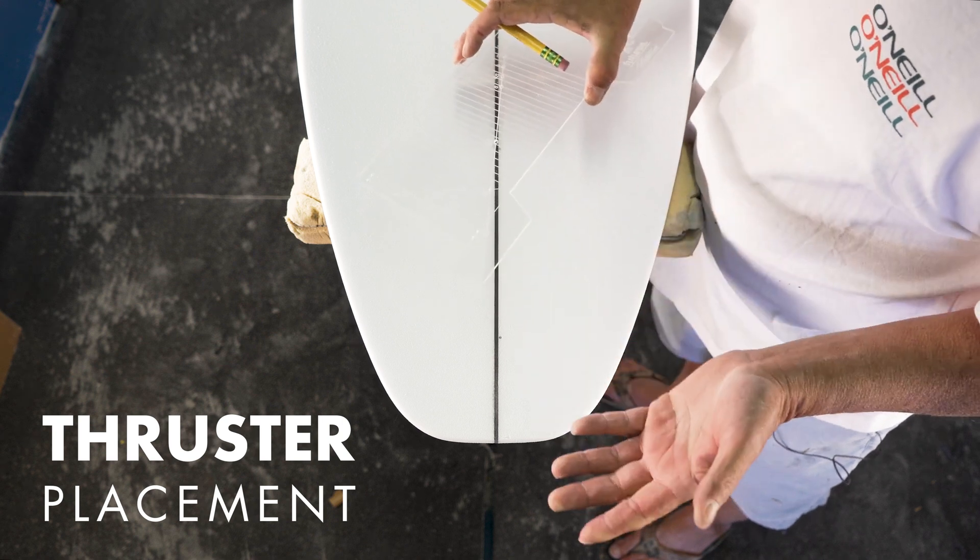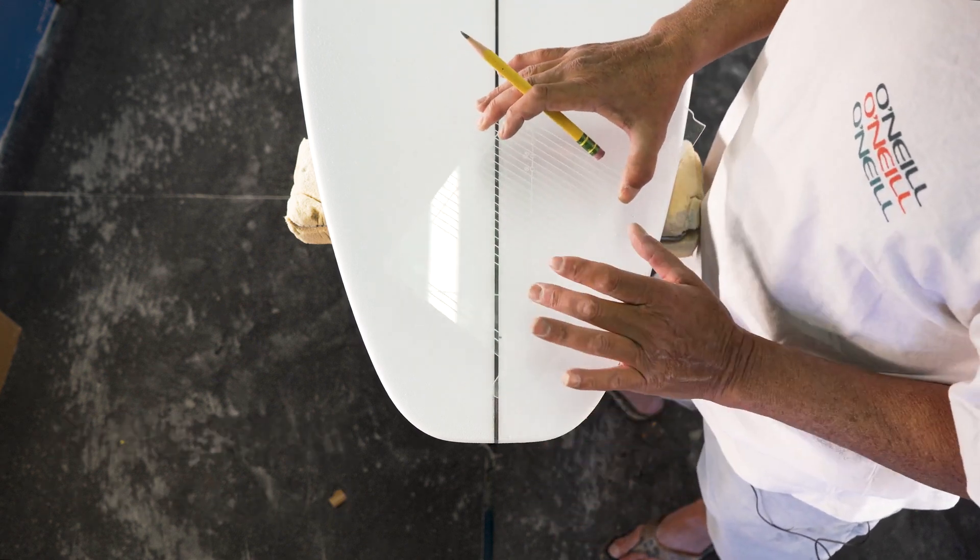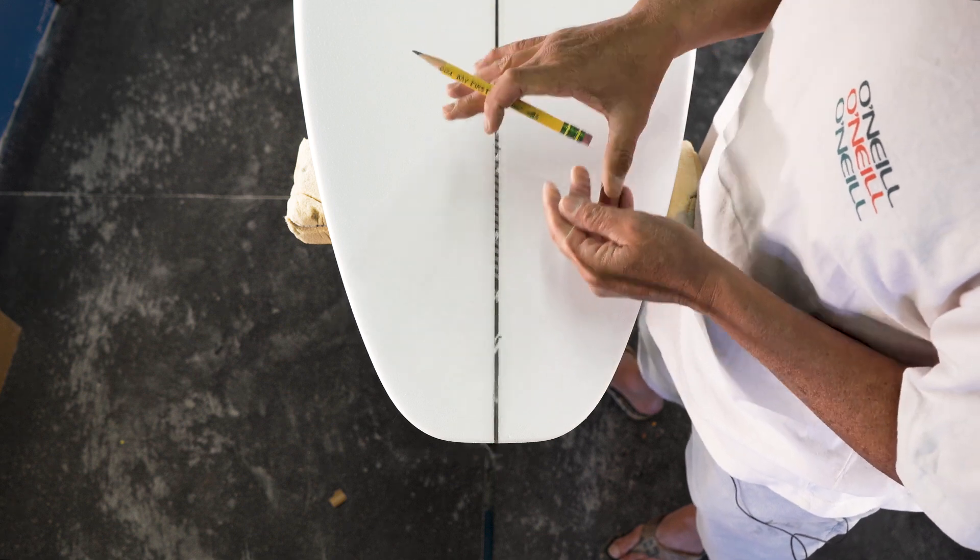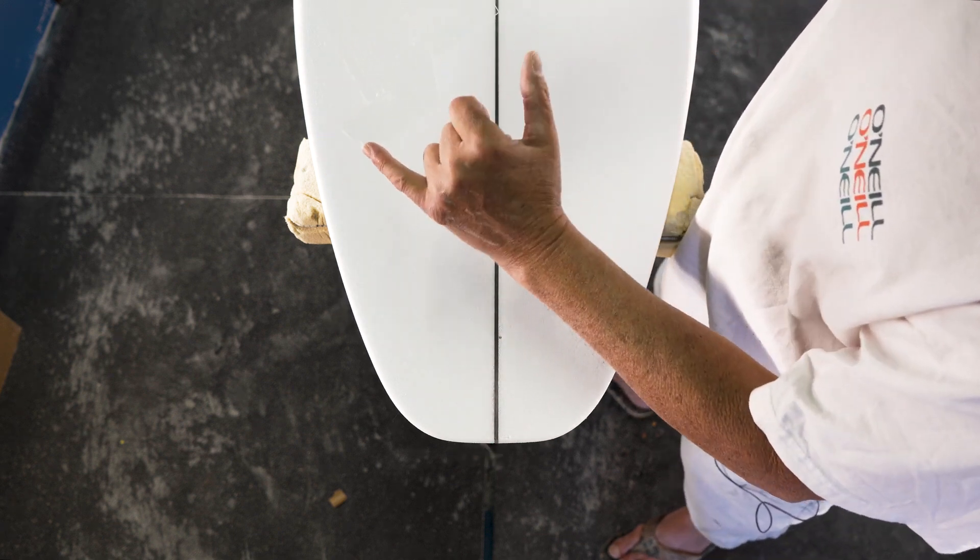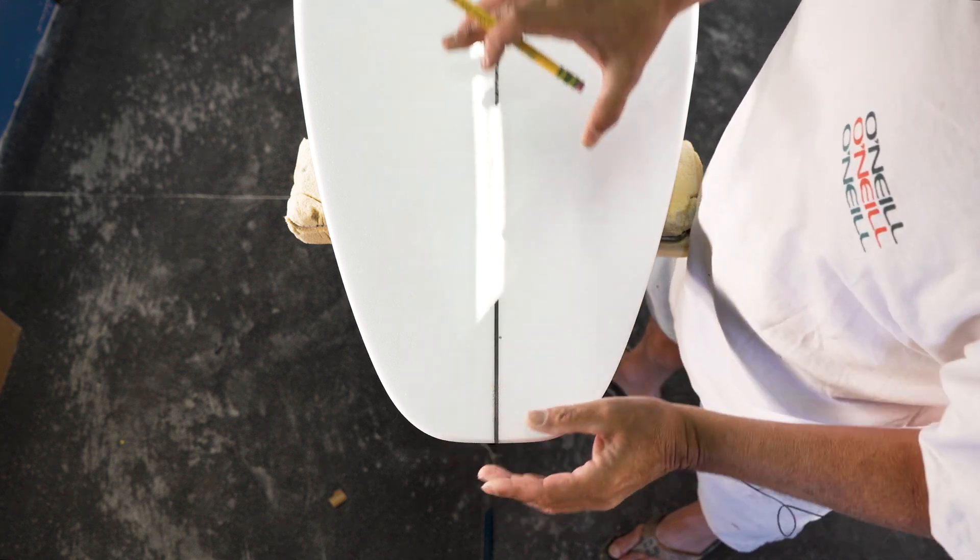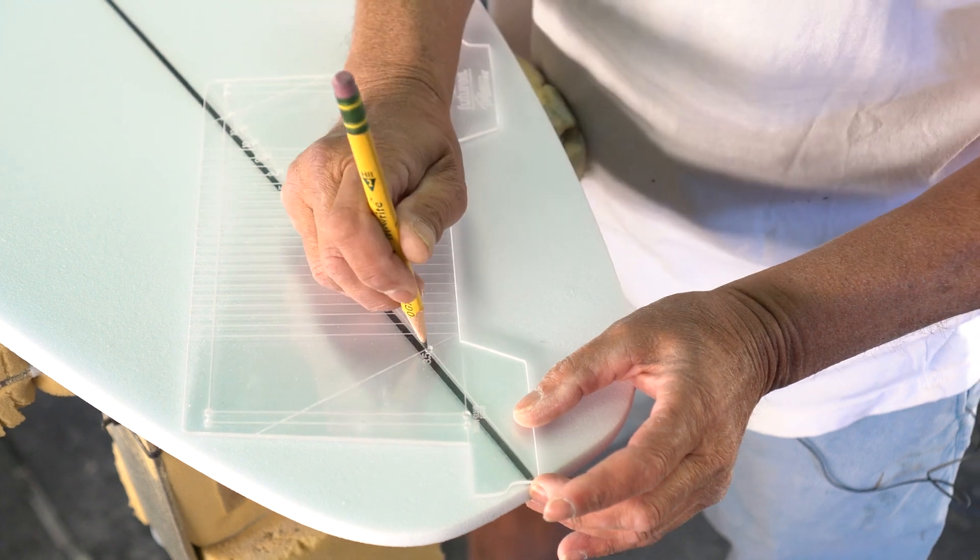All right, a basic stock model. I'm going to set them. Normally, my stock measurements are three and a half and 11. So, three and a half, this is the tail measurement. I'm going to lay this right on the tail, set a couple dots.